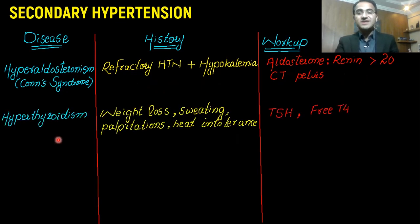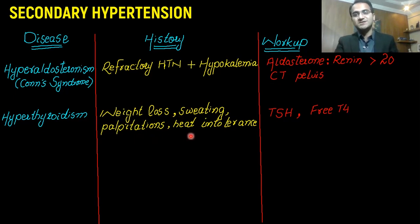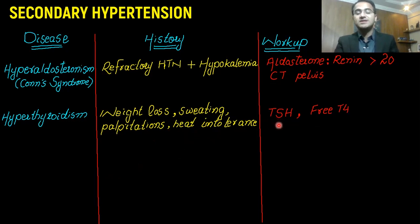Hyperthyroidism can also cause secondary hypertension. In the history, you will find weight loss, excessive sweating, palpitations, and heat intolerance. For the workup of hyperthyroidism, you need to get a thyroid profile including TSH and free T4.